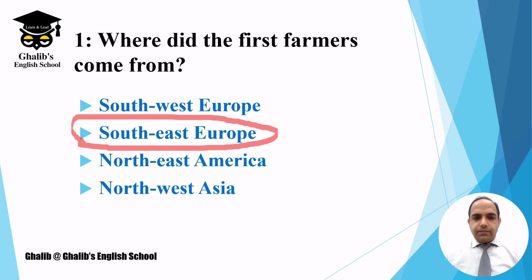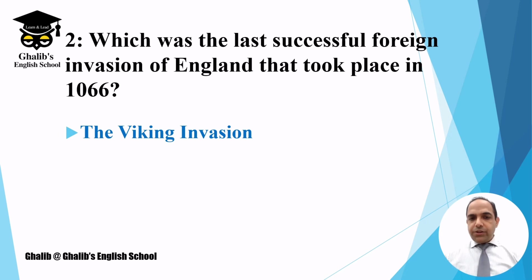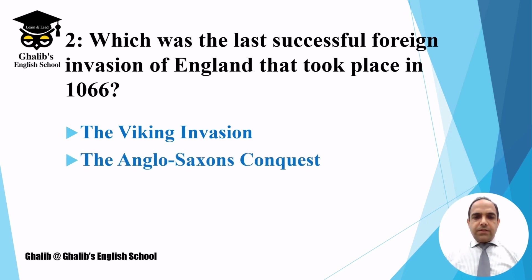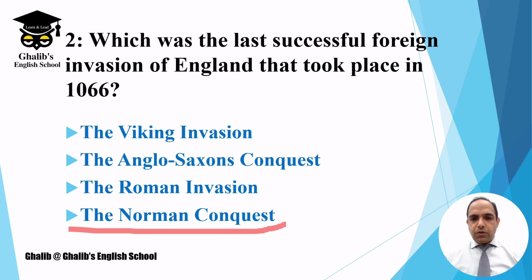Question number two: which was the last successful foreign invasion of England that took place in 1066? The options are: Viking invasion, Anglo-Saxon conquest, the Roman invasion, or the Norman conquest. This question indicates that there were four different foreign invaders who invaded England in different time periods. The answer is the Norman conquest — the French invaded England in 1066, and that was the last foreign invasion.